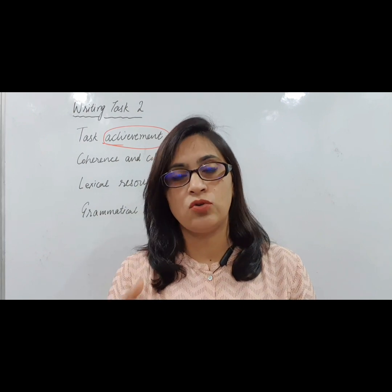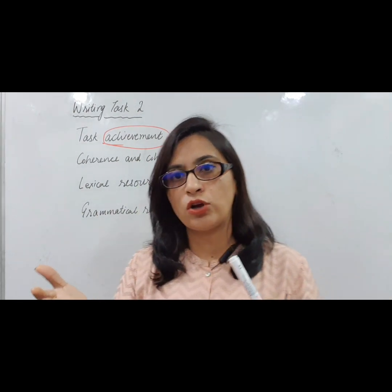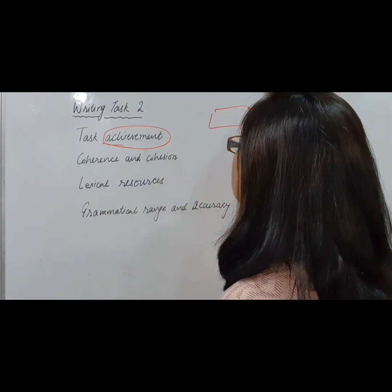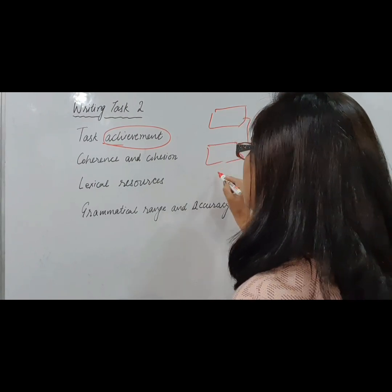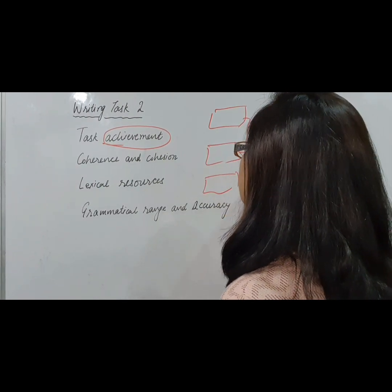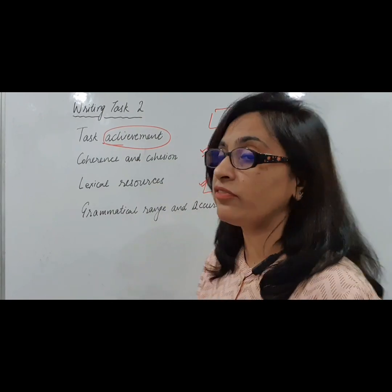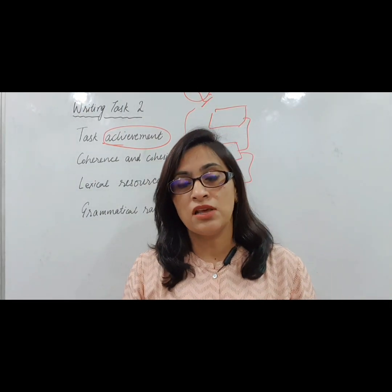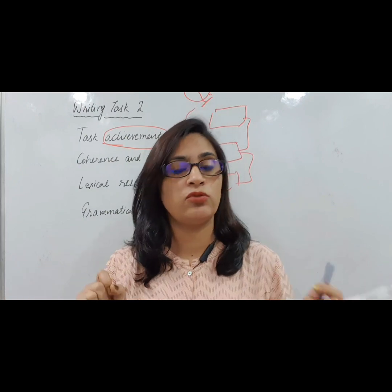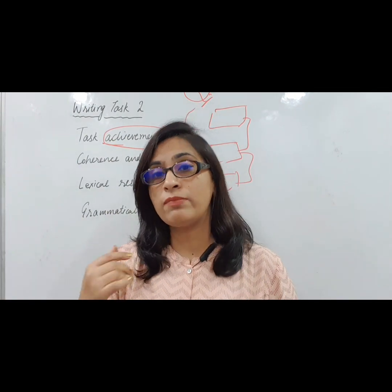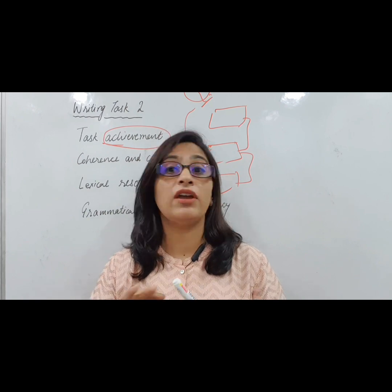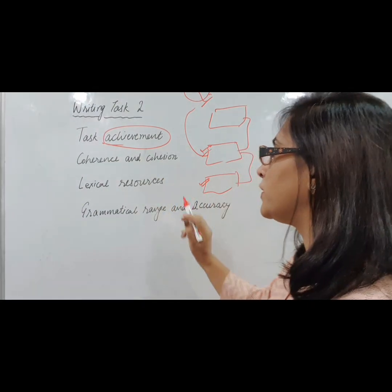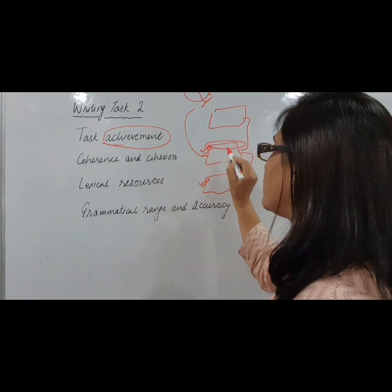The next criterion is coherence and cohesion. Most of the time while writing, students go off track because we are writing with our conscious mind while our subconscious mind keeps sending ideas. When we make paragraphs, the paragraphs may be related to each other, but if we read each paragraph individually, it may not relate to the question. This happens because thinking and writing are going simultaneously, and we haven't planned the topic properly.